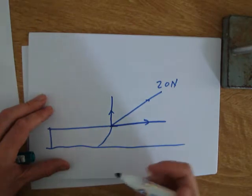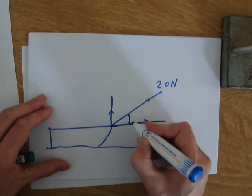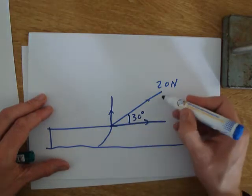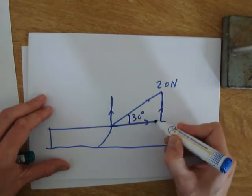If we imagine this angle here is say 30 degrees, we've got the two components at right angles.